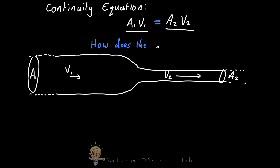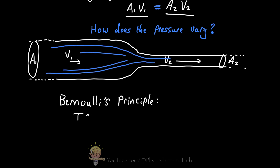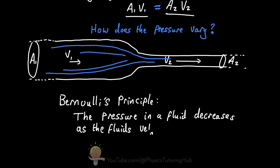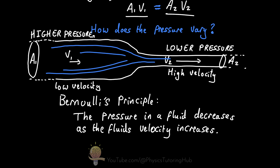So what about the fluid pressure along this length of pipe — how does it vary? According to Bernoulli's principle, the pressure in a fluid decreases as the fluid's velocity increases. From the continuity equation, we know that as the pipe narrows, the velocity must increase to keep the flow rate the same. Therefore, the right-hand side will have the lowest water pressure because the water moves fastest there, and the left-hand side will have the highest pressure because the water velocity is at its lowest.